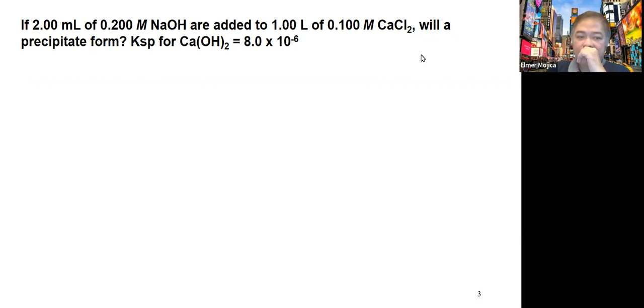If 2 mL of 0.2 molar NaOH are added to 1 liter of 0.1 molar calcium chloride, will a precipitate form? You're given the Ksp here for calcium hydroxide equals 8.0 times 10 to the negative 6.